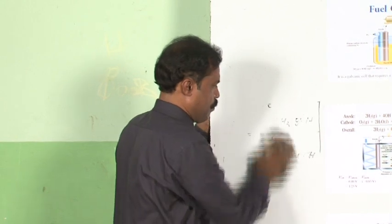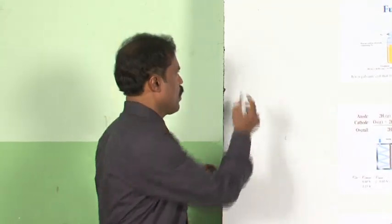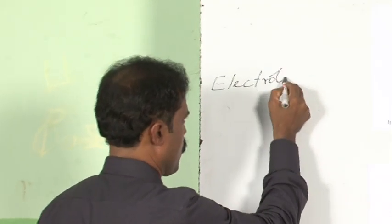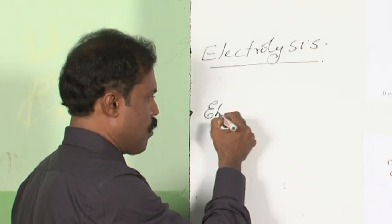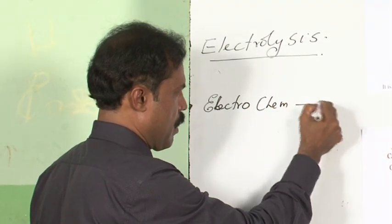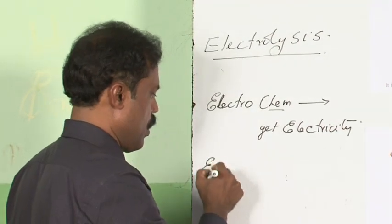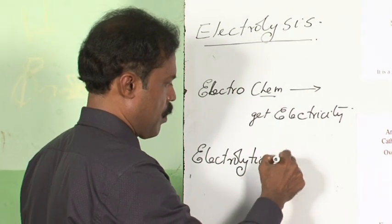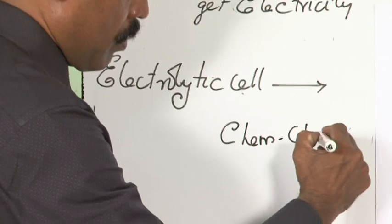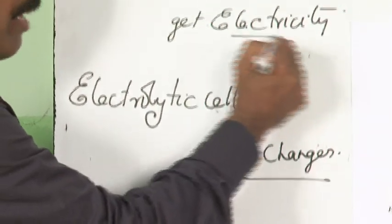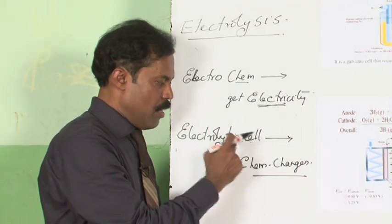We will now move on to the next section: electrolysis. We have been discussing about electrochemical cells. Now let us start discussing about electrolysis. The major difference is: in electrochemical cells, because of the chemical reaction you get electricity. Whereas in an electrolytic cell, electricity is supplied to the cell to bring about chemical changes. So in the electrochemical cell we tap out electricity; in the electrolytic cell we supply electricity. Here, chemical change gives electricity; there, electricity brings about chemical change.